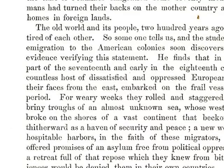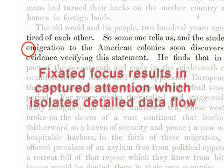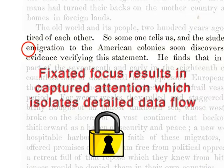Try this experiment. Get a book or a magazine and focus on the first letter of a word in a line. Without taking your eyes off of that letter, see how far across the page you can read. Chances are, you didn't get past the next two or three letters. Your ability for detailed vision was locked in place.